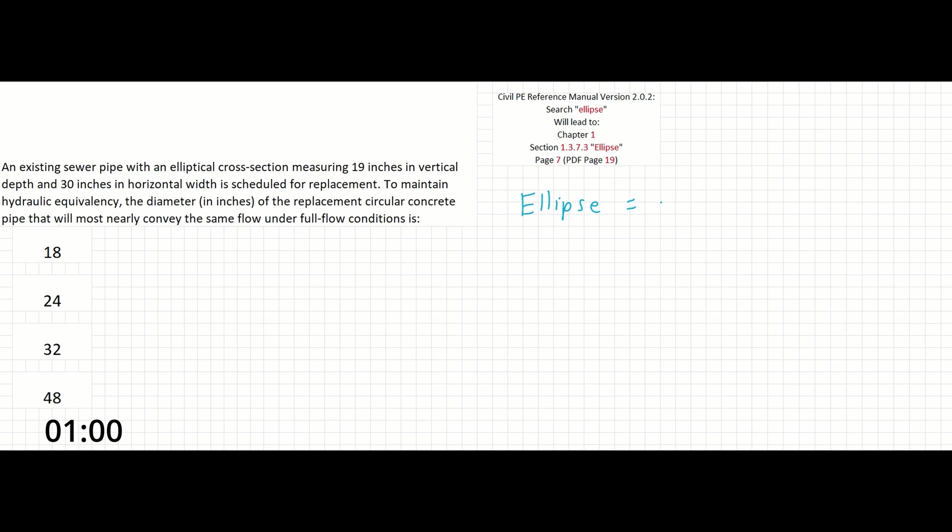All we have to do is set an equation for an ellipse equal to the equation of a circle. If we search ellipse in the reference manual, we can see that the equation is area equals π times a times b.